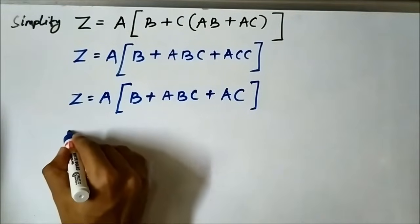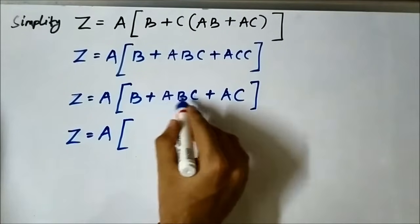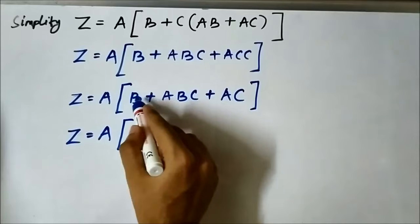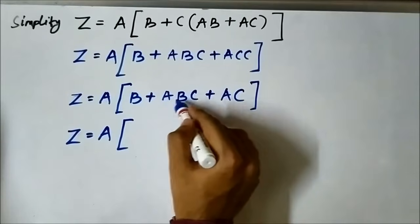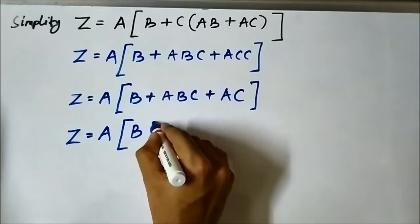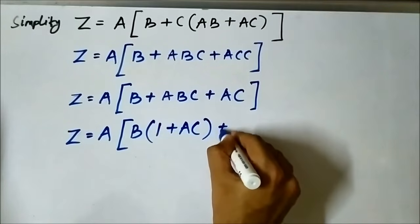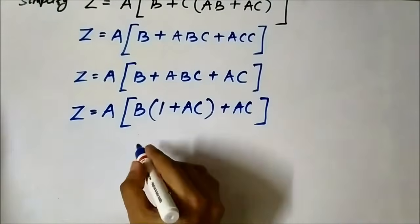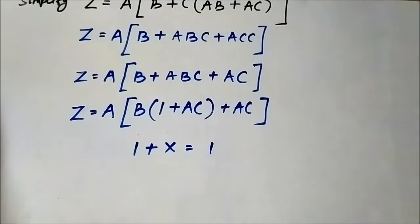Here z equals a·b — b is common in the first two terms, and a·c is common in the last two terms. Let us take b common first. It becomes b·(1 + a·c) plus a·c. We know that 1 OR'd with any Boolean variable gives us 1.